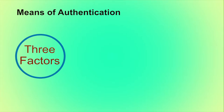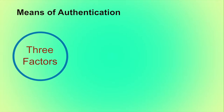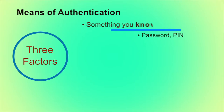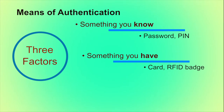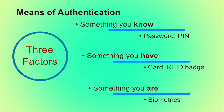What are the means of authentication? Traditionally, there are three means of authentication. First, something you know, like a password or PIN. Second, something you have, like an ID card or RFID badge. And last, something you are, like biometrics. All of these methods, if properly implemented and used, can provide secure user authentication.